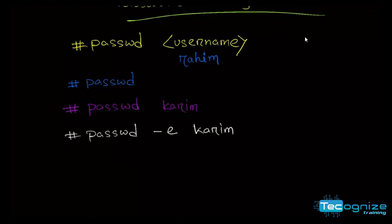We set the password and it is valid, but the date will expire. We will first log in with this password, but we will need to change this password. In this case, we will expire the password. Now we need a user to log in to our system. If we have another account, we will suspend the password, and we will log in with the same password. So we will use the passwd command.